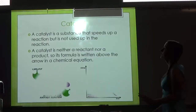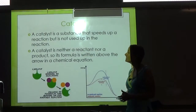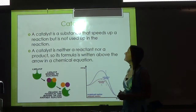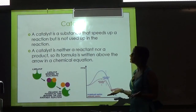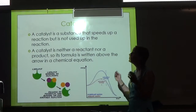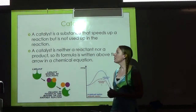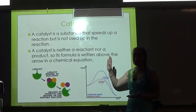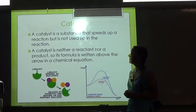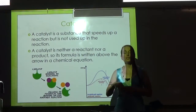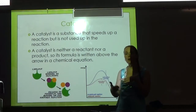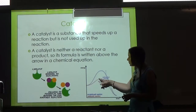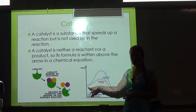A catalyst is a substance that speeds up a reaction, but it's not used up in the reaction. Since it's neither a reactant nor a product, that's why its formula is written above the arrow—it's just present to help the reaction occur. It does that by lowering the activation energy.